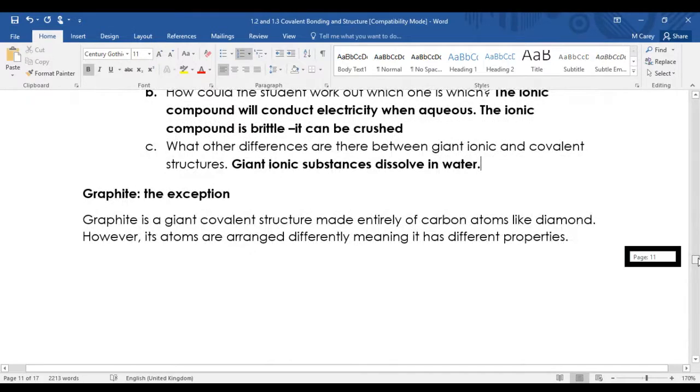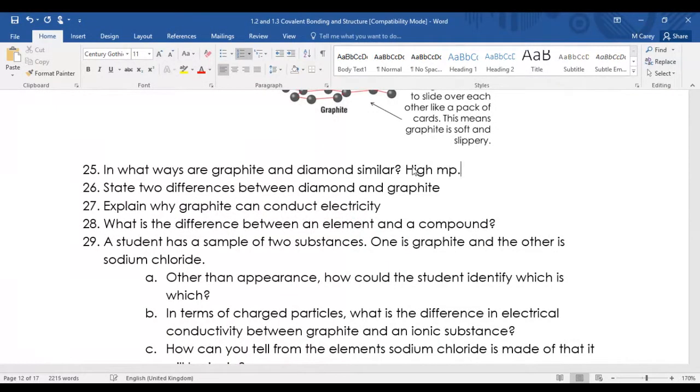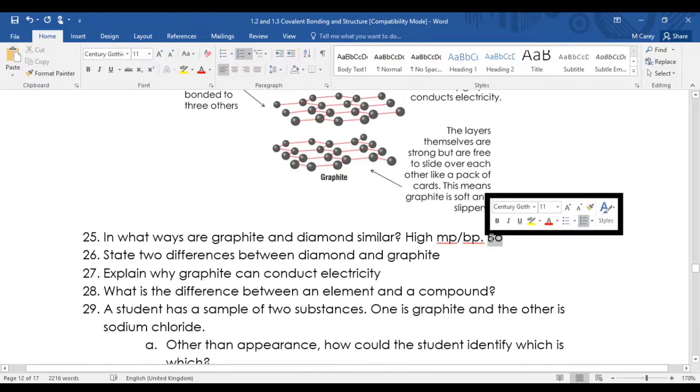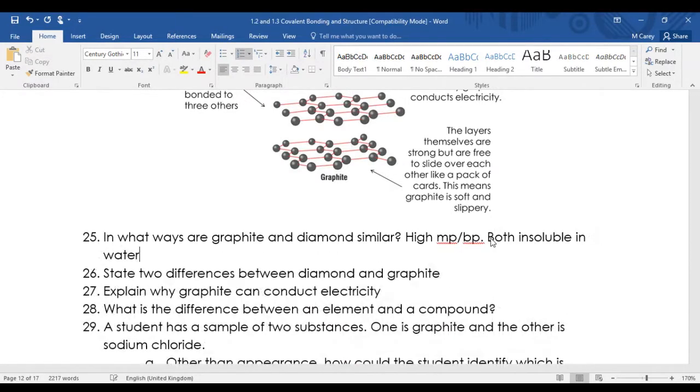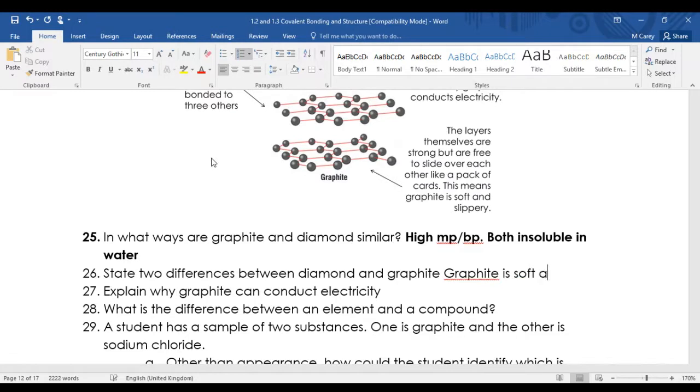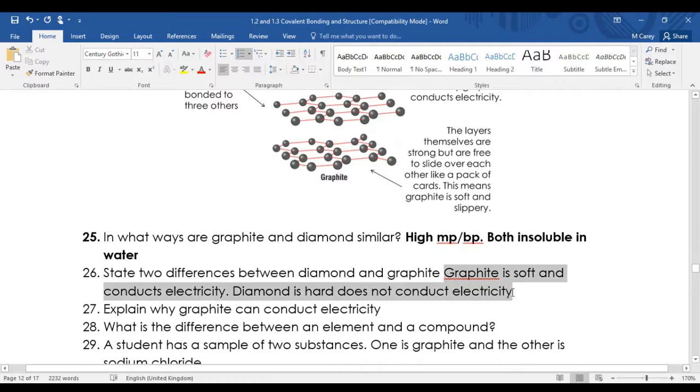Graphite is a giant covalent structure. So in one way are diamond and graphite similar? They both have high melting and boiling points, both insoluble in water. Take two differences - graphite is soft and conducts electricity due to delocalized electrons. So there's two differences there.